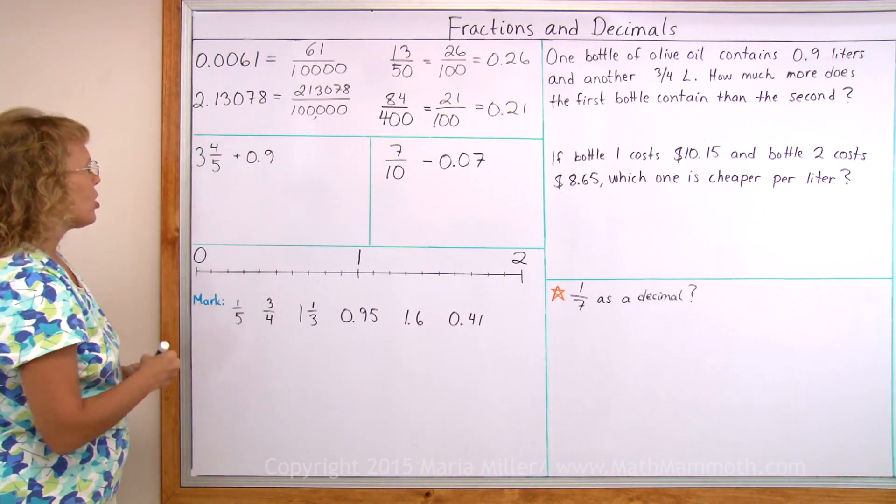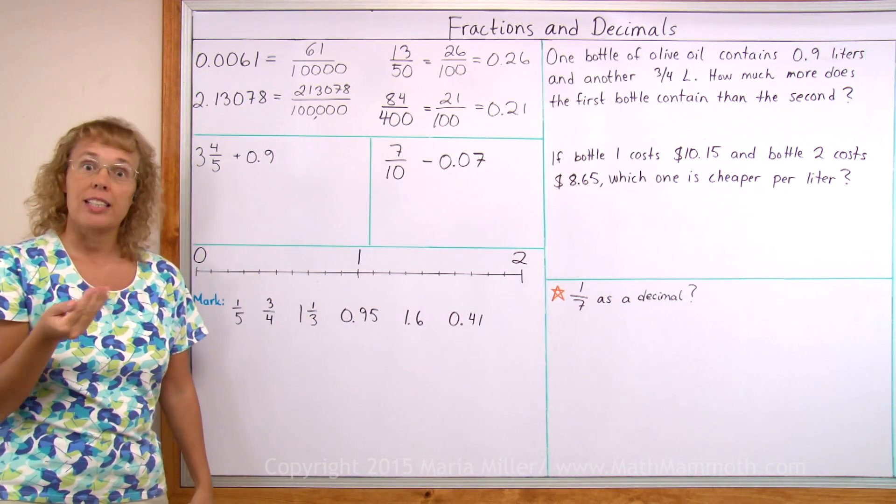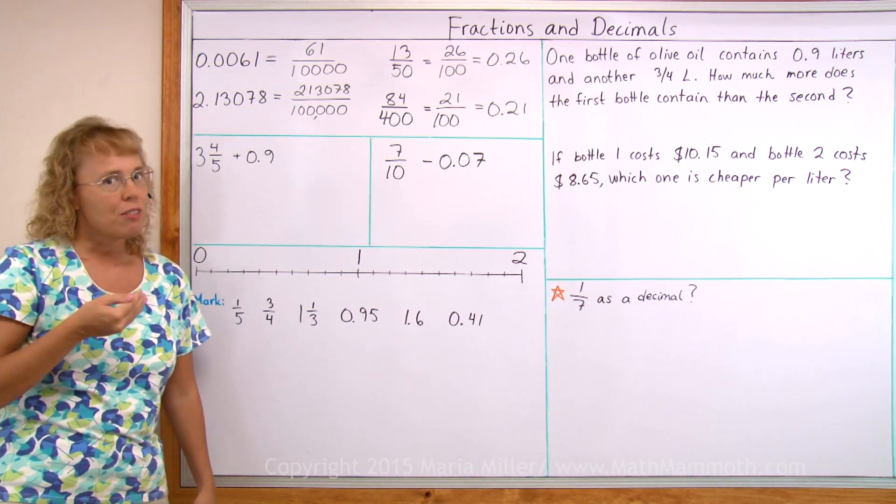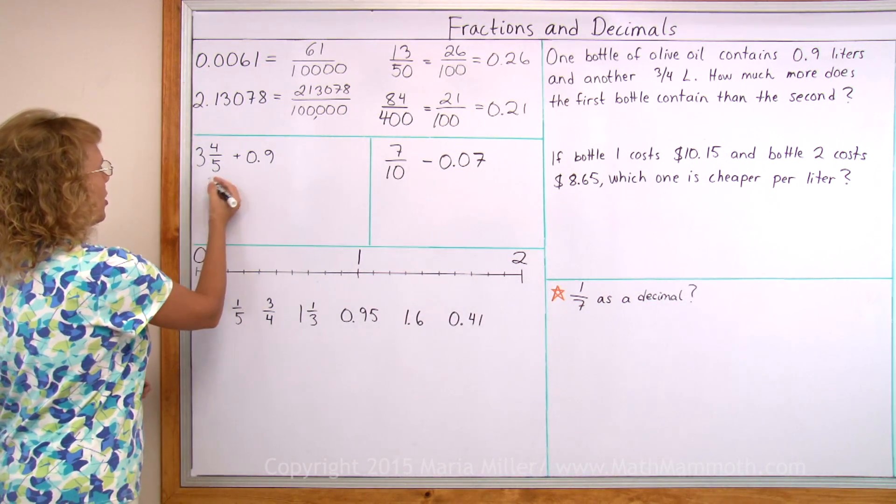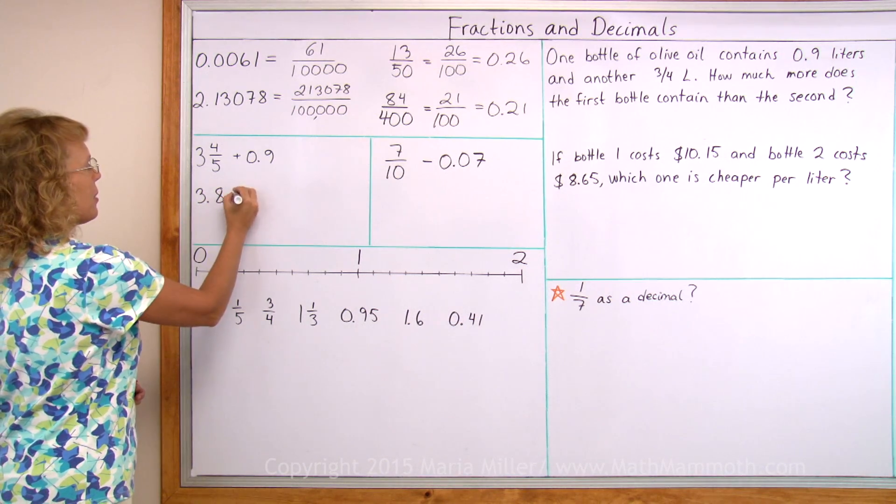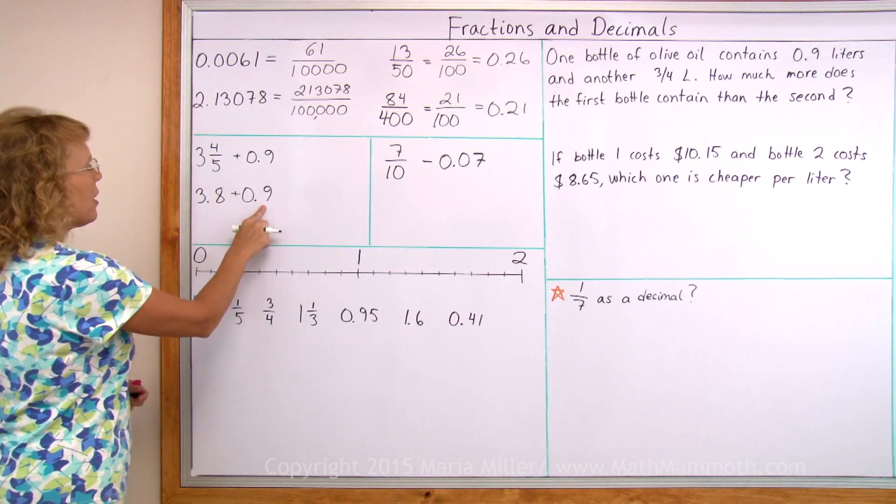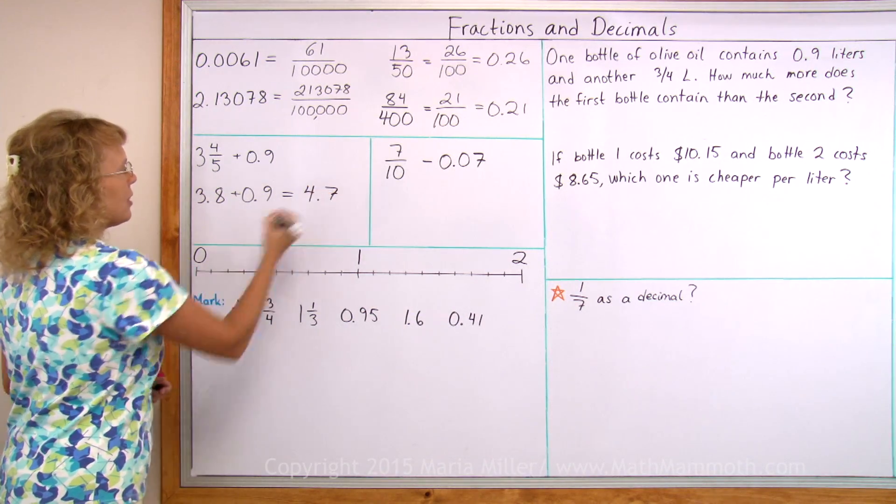So I think this will be easier if we change this number here into a decimal. Four-fifths as a decimal. Four-fifths is equal to eight-tenths. So we get 3.8, eight-tenths. And then nine-tenths here. And so the addition is four and seven-tenths.